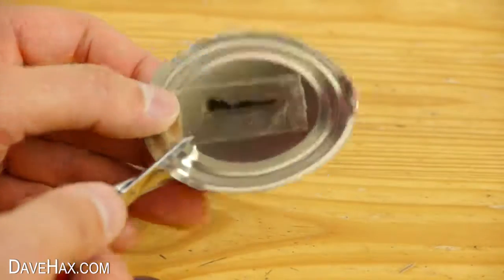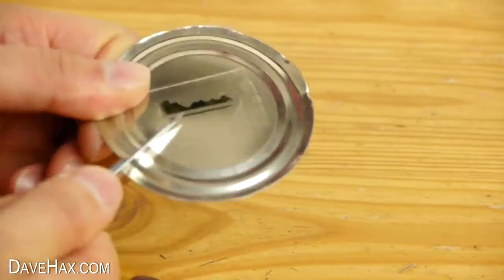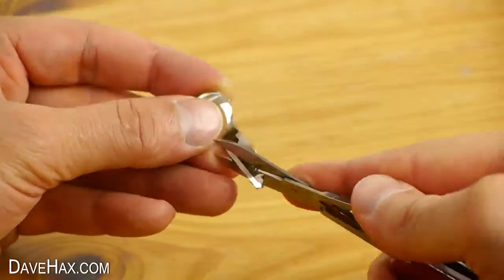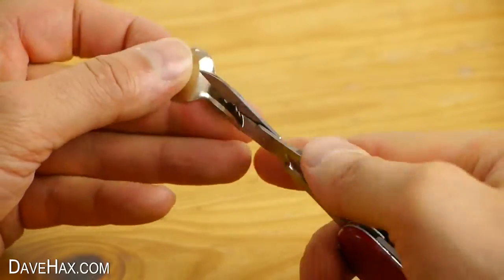Then, using a sharp pair of scissors, carefully cut out the key. Do be careful not to cut yourself on any sharp metal and make sure you're nice and accurate, otherwise it won't work.